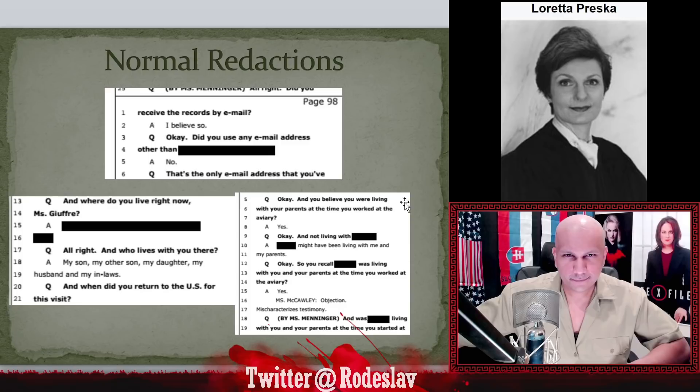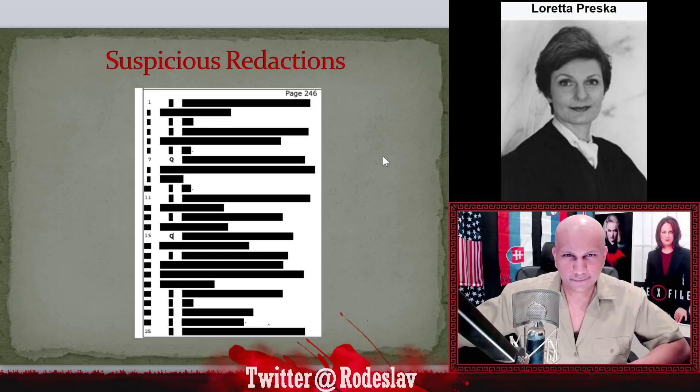Now let's look at some suspicious redactions. The worst one I saw is page 246, which was completely redacted — not a single word or sentence. There are a couple of letters visible, like two Q's, and some numbers, but for whatever reason they decided to completely redact this entire page. That's very suspicious — the most suspicious one I saw.